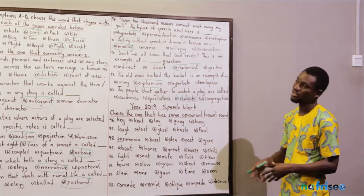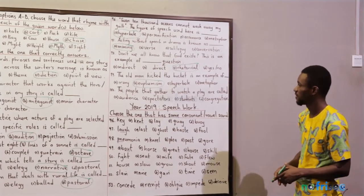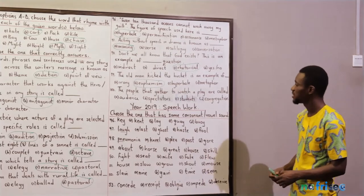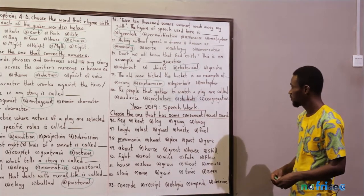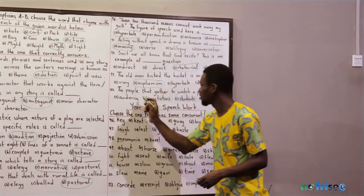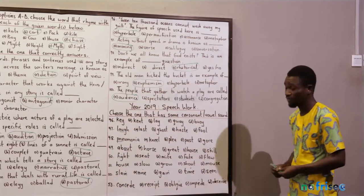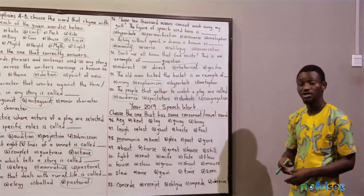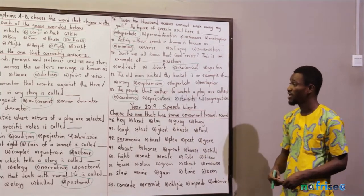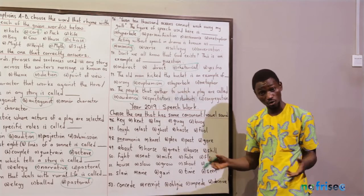The last question under speech work and literature year 2020 for BECE: the people that gather to watch a play are called — audience, spectators, students, or congregation? Audience. Spectators are used in football matches, students for classrooms, and congregation in church. The best register when it comes to plays, movies, and shows is audience.